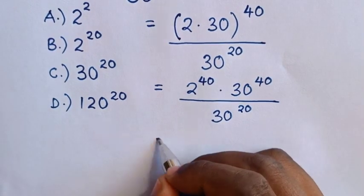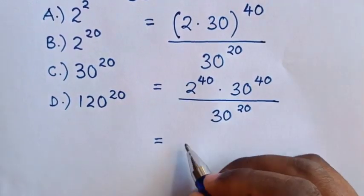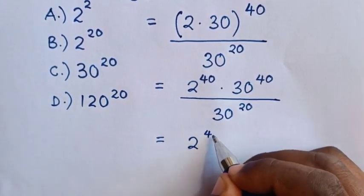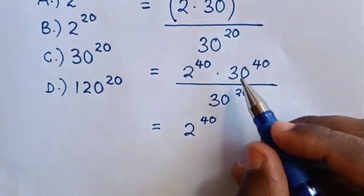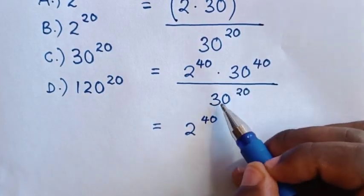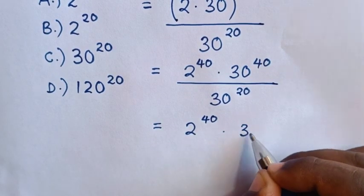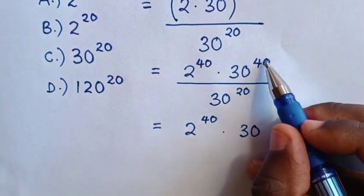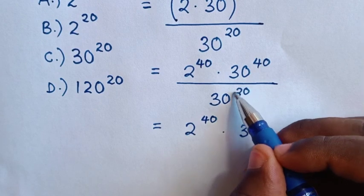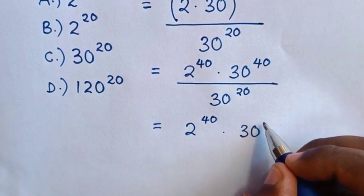So, this will be equal to this 2 power of 40, then, here we have division of exponents with same base. So, it will be times base of 30, then power of 40 minus power of 20, which is power of 20.